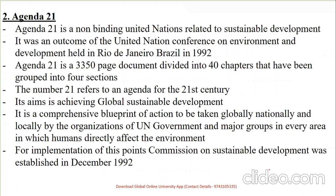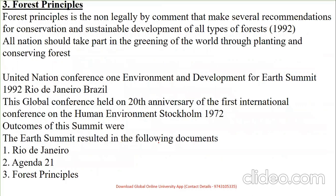Agenda 21 is a non-binding United Nations resolution related to sustainable development, an outcome of the 1992 UN Conference. It is a 3,050-page document divided into 40 chapters and four sections. The '21' refers to the 21st century. Its aim is to achieve global sustainable development — a blueprint of action to be taken globally, nationally, and locally in every area where humans directly affect the environment. The Commission on Sustainable Development was also established in 1992.